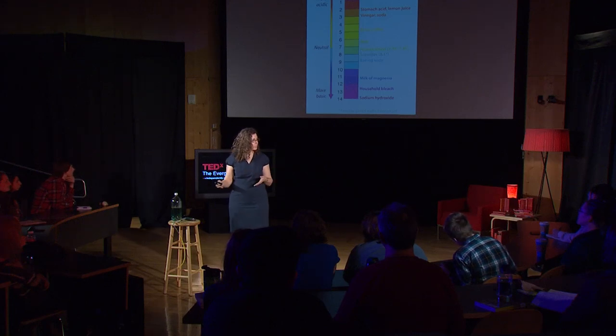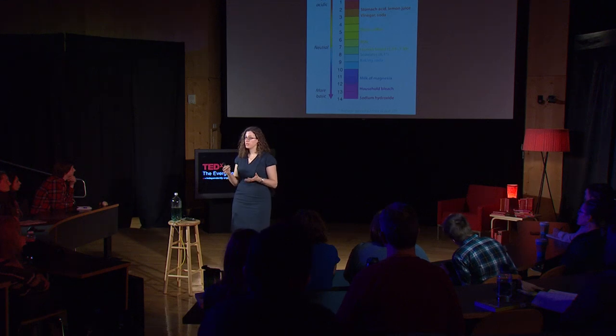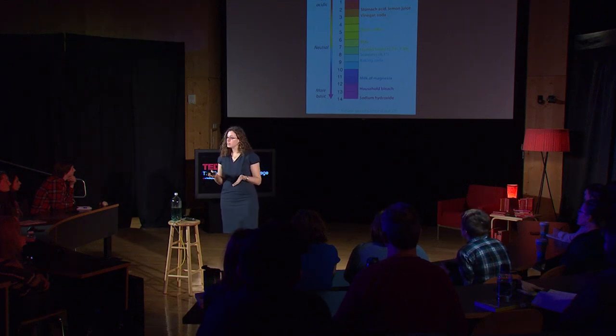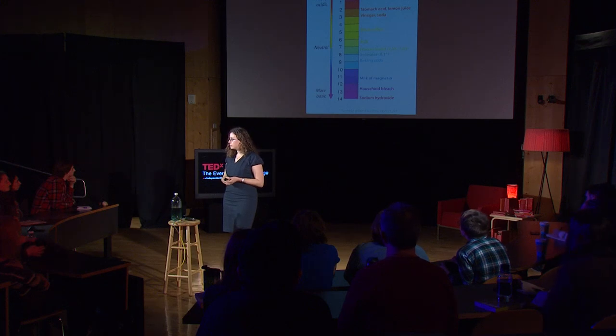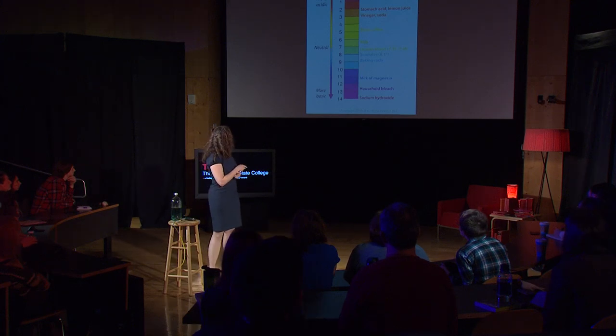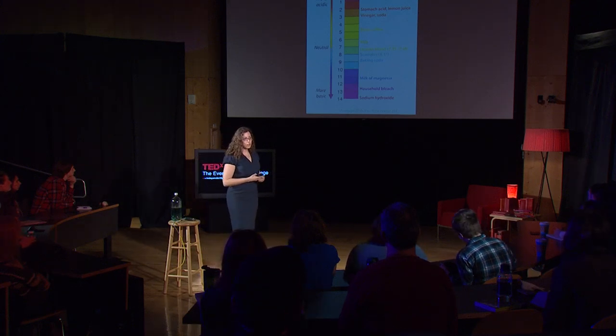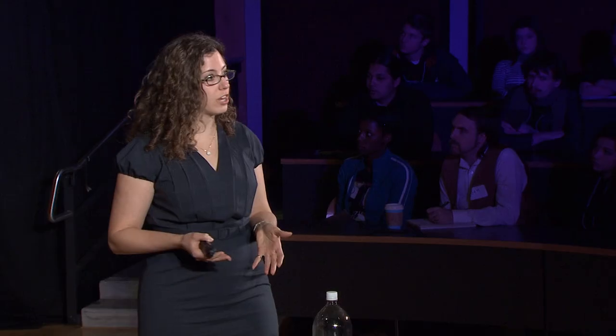The way we measure this concentration is with the pH scale, which is a log scale. So in normal counting you go 1, 2, 3, but on a log scale you count 1, 10, 100. So small differences in the pH of a liquid have big differences in the concentration of hydrogen ions. The pH of our world's oceans right now is about 8.1. Over the course of the industrial era, the pH of the oceans has dropped 0.1 of a pH unit. While this doesn't sound like much, it's actually a 30% increase in the concentration of hydrogen ions in the ocean over the past 250 years.